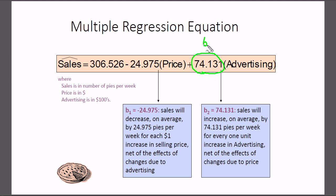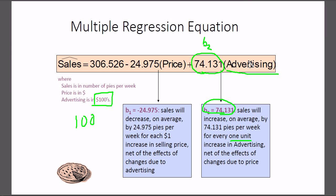We have a similar interpretation for B2, the partial slope for advertising. 74.131 — which is positive — tells us that sales will increase on average by 74.131 pies per week for every one unit increase in advertising, net of the effects of changes due to price. In other words, no matter what the price is, this is the impact of advertising. We need to remember that advertisement was recorded in hundreds of dollars, so one unit of advertising equals one hundred dollars.